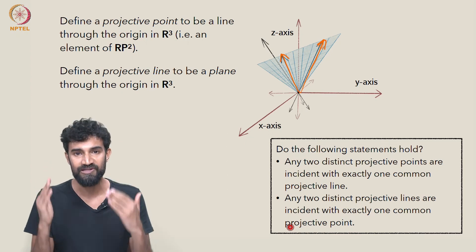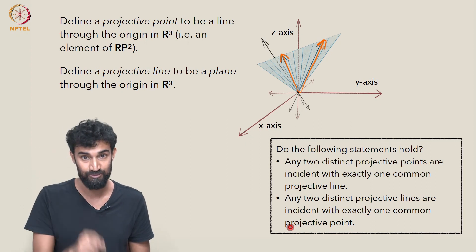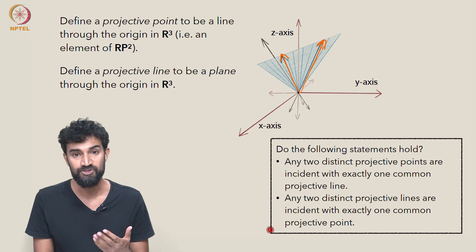Any two planes through the origin will intersect in a single unique line through the origin. So this statement is also true.